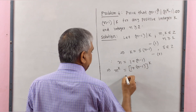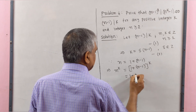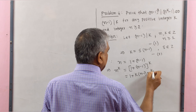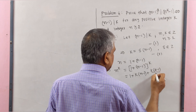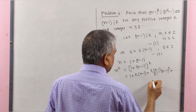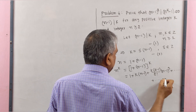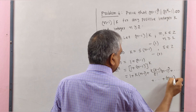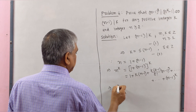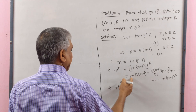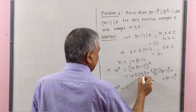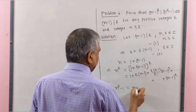By the binomial theorem, we get this equal to 1 plus K(N minus 1) plus K(K minus 1) divided by factorial 2 times (N minus 1) squared plus dot dot dot plus (N minus 1) to the power K. Therefore, N to the power K minus 1 equals, taking 1 to the left side, we factor out (N minus 1).